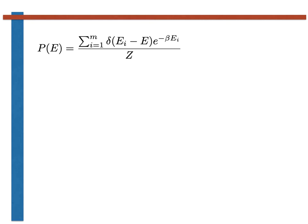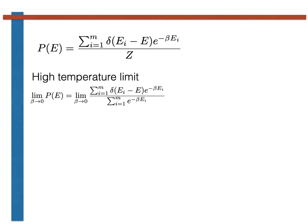We can understand why this happens by considering the expression for the canonical distribution of energies from the previous slide. Let's start by considering what happens to this distribution in the high temperature limit as beta tends to zero. In this limit, the exponential term in the numerator and the denominator here tend to one.